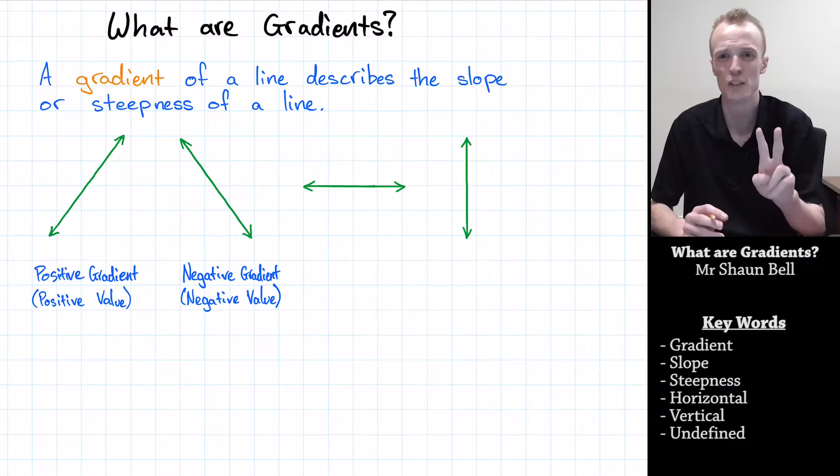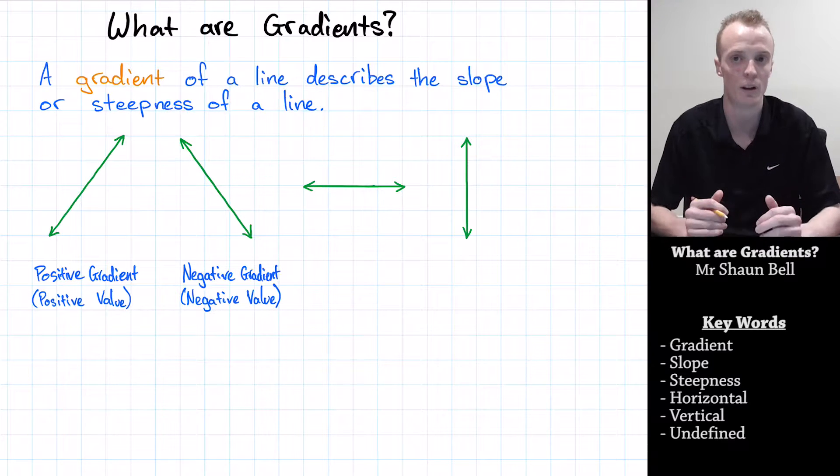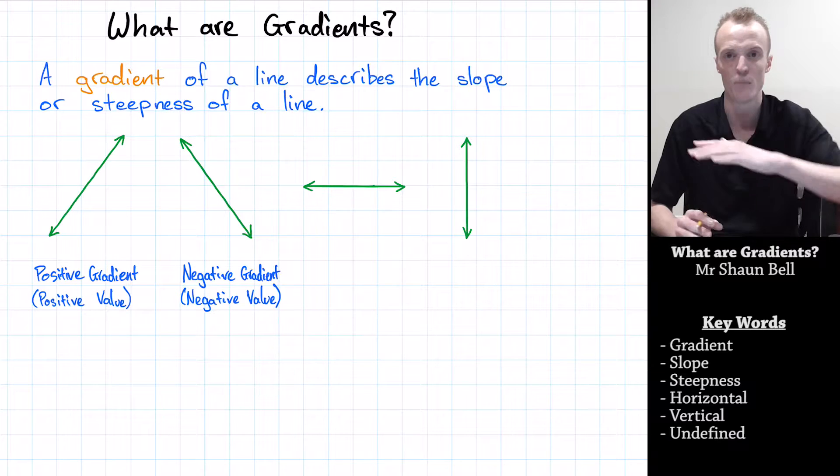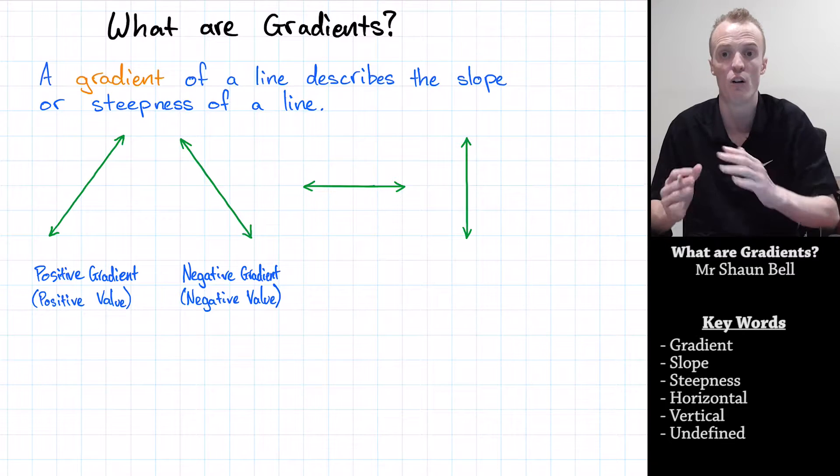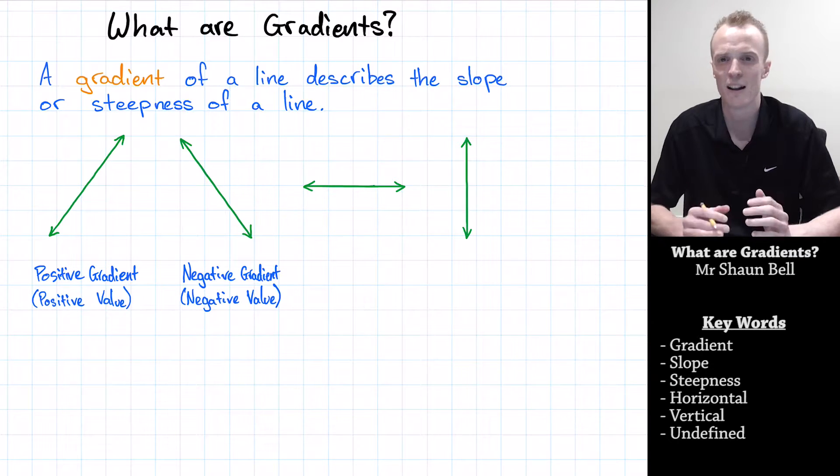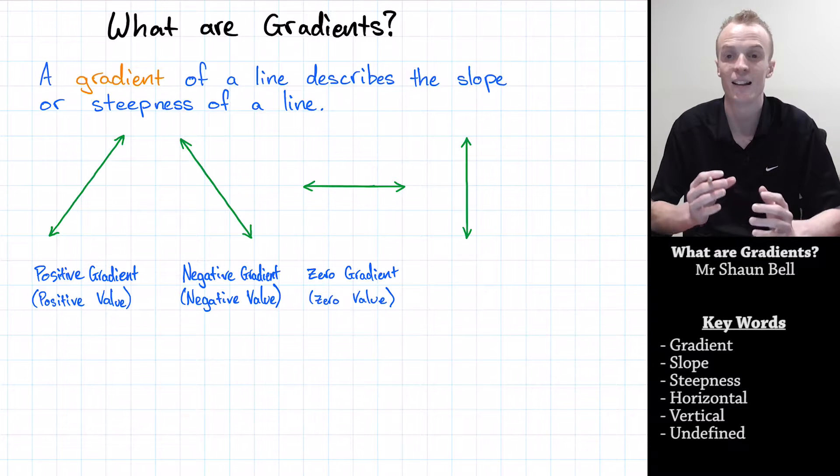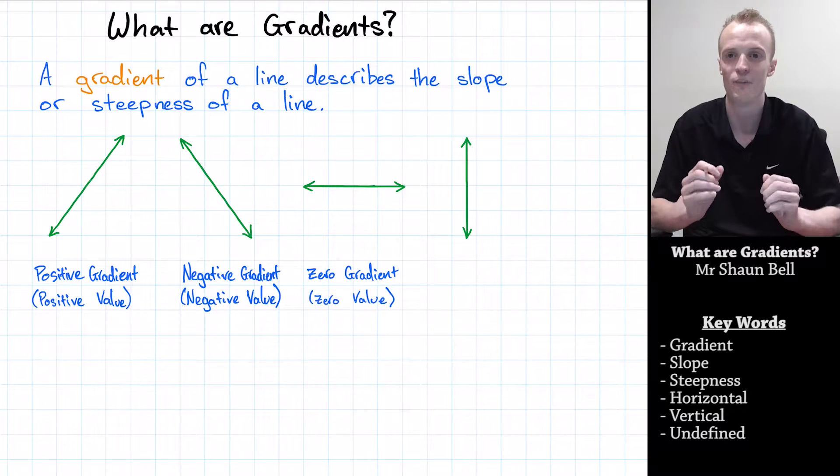There are two special situations that can also occur. What if we've got something that's completely level, horizontally flat? This kind of gradient can be referred to as the neutral gradient, or the zero gradient. It gets the name zero gradient because we give the gradient a value of zero.